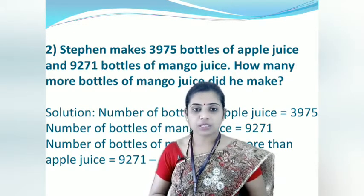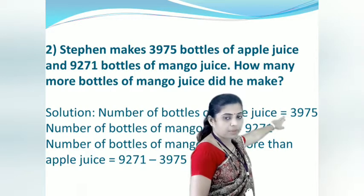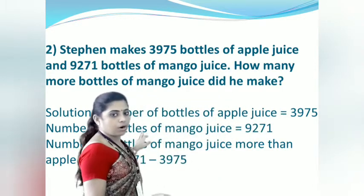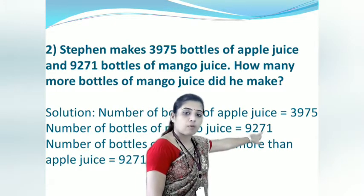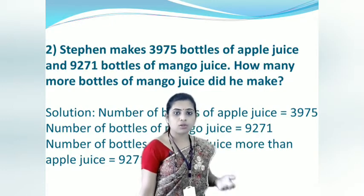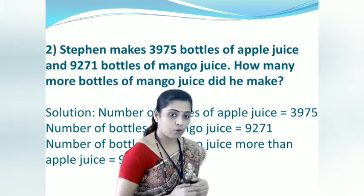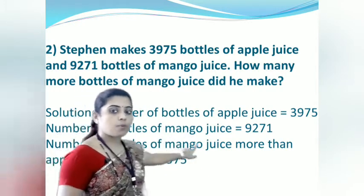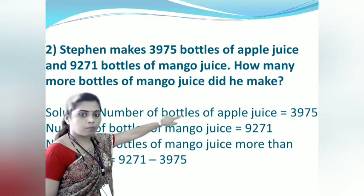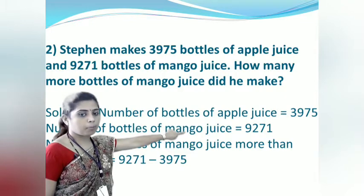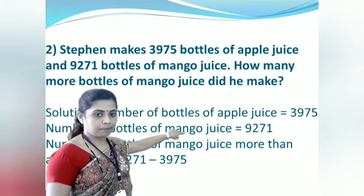What is given? Number of bottles of apple juice: 3,975. Number of bottles of mango juice: 9,271. What we have to find out: how many more bottles of mango juice? 'How many more' is the keyword to identify subtraction. We need to find the number of bottles of mango juice more than apple juice, by subtracting apple from mango.